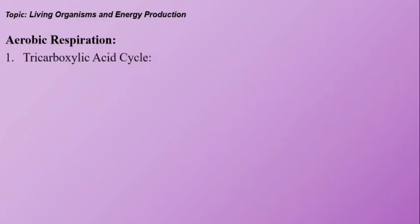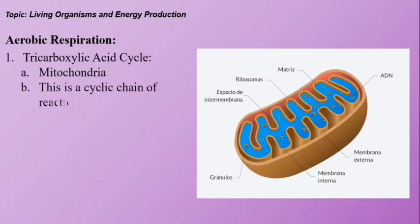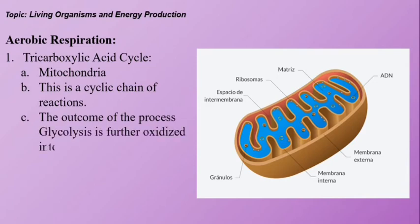Tricarboxylic acid cycle: Process takes place in mitochondria. This is a cyclic chain of reaction. The outcome of the process glycolysis is further oxidized into CO2, H2O, NADH2, FADH2. Note, similarly remember three words: CO2, H2O, FADH2.